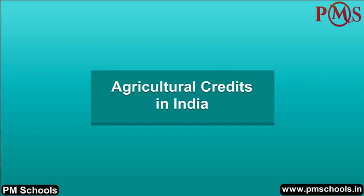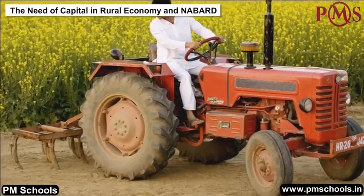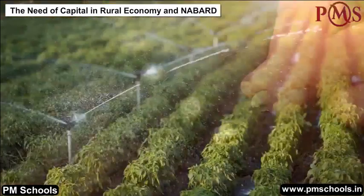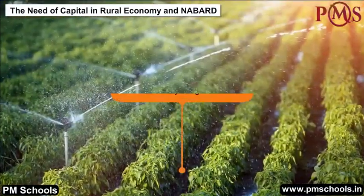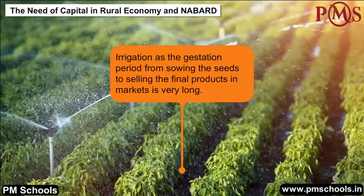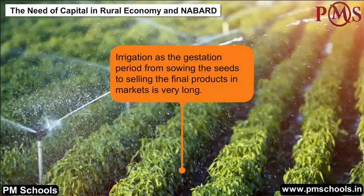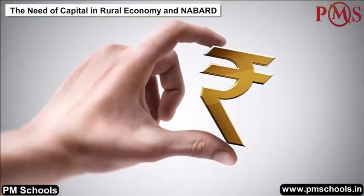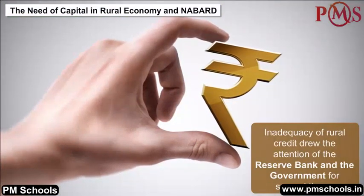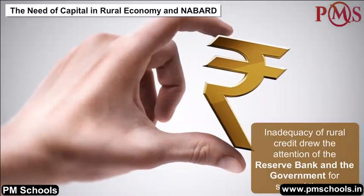Agricultural Credits in India: In agriculture, farmers used to borrow money for their initial expenses like seeds and irrigation, as the gestation period from sowing the seeds to selling the final products in the market is very long. During the post-independence period, the inadequacy of rural credit drew the attention of the Reserve Bank and the government on several occasions.